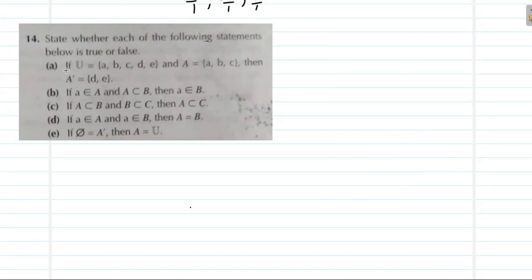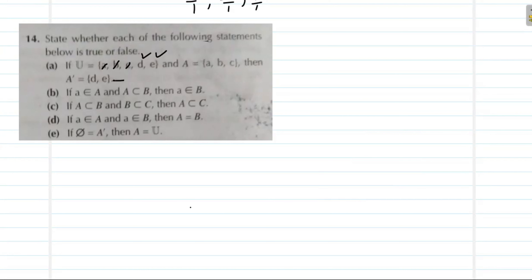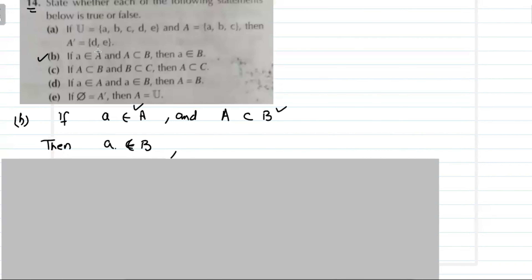Question 14: State whether each of the following statements is true or false. Part A: If U = {a, b, c, d}, A = {a, b, c, d}, B = {a, b, c}, then A' = {d}? We note the unique elements: U has a, b, c, d. A has a, b, c, d. B has a, b, c. So A' = U minus A. This needs to be evaluated.